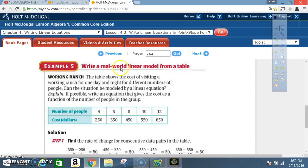Example 5, write a real world linear model from a table. Working ranch. The table shows the cost of visiting a working ranch for one day and night for different numbers of people. Can the situation be modeled by a linear equation? Explain. If possible, write an equation that gives the cost as a function of the number of people in the group. Here's our table. Number of people, costs in dollars. Four people cost $250. Six people cost $350. Eight costs $450. Ten, $550. Twelve, $650.